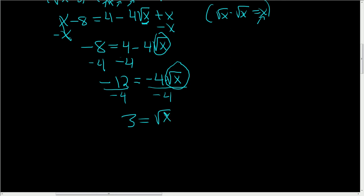Finally, we're in a position where we have isolated the square root of x. So we'll square both sides. So we end up with x equals 9.